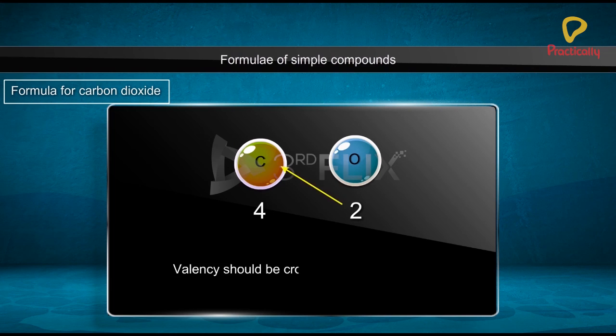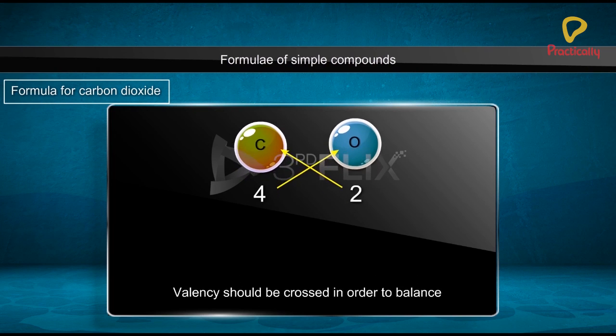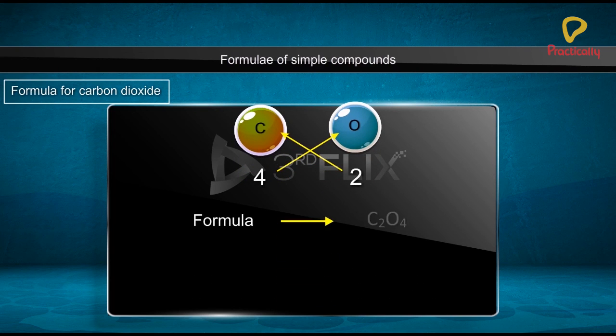Valency should be crossed in order to balance. The formula obtained is C2O4.